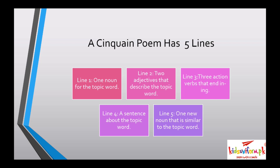Line three: three action words that end in '-ing.' Here you have to write three verbs that end in '-ing.' And line four is a sentence about the topic word — here you have to write a complete sentence about your topic word.